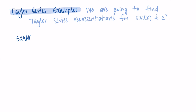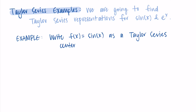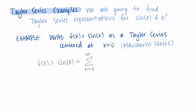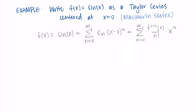Let's write f of x equals sine x as a Taylor series centered at x equals zero. Because it's centered at zero, this is really a Maclaurin series. We know it's going to have the form of the sum from n equals zero to infinity of C sub n times x minus zero to the n. It becomes a Taylor series when we use the specific formula for the coefficients: the nth derivative of f at zero divided by n factorial, multiplied by x to the n.